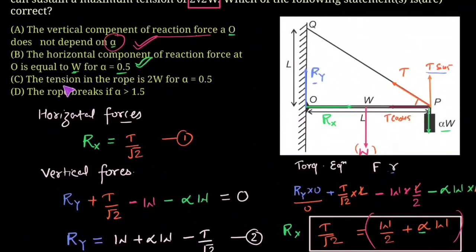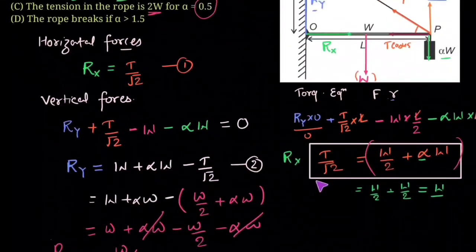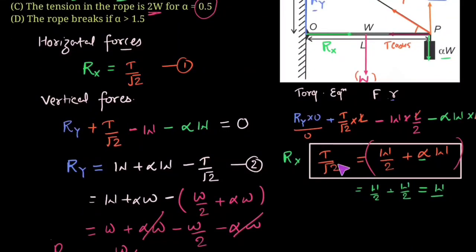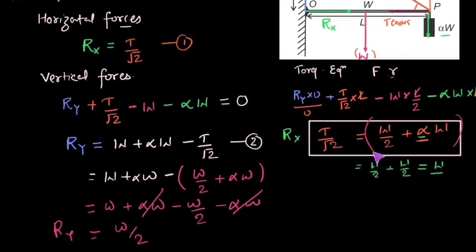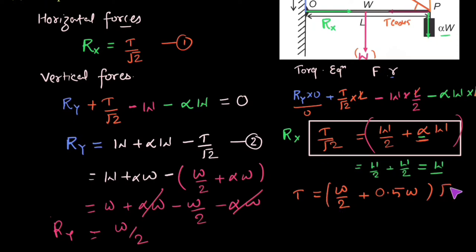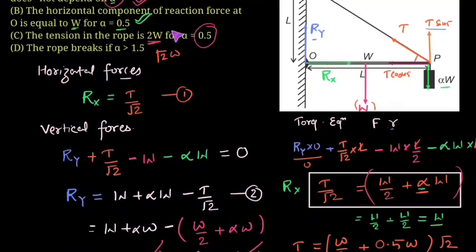Option C states that the tension in the rope is 2W when alpha = 0.5. Putting alpha = 0.5 into T/√2 = W/2 + 0.5W = W, so T = W·√2 = √2·W. This is not equal to 2W, so Option C is incorrect.